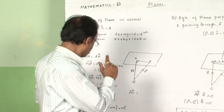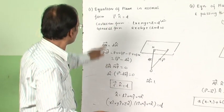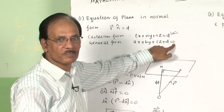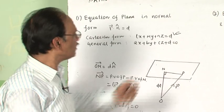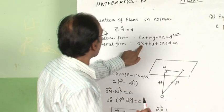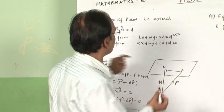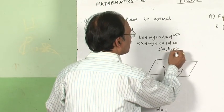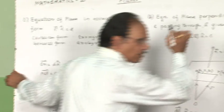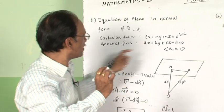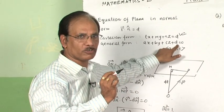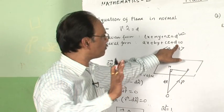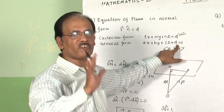The generalized form of the equation of a plane is ax + by + cz + d = 0. The coefficients of x, y, and z — that is a, b, c — are nothing but the direction ratios of the normal to the plane. Remember: if d equals 0, the plane passes through the origin, and any locus passing through the origin will not have a constant term.